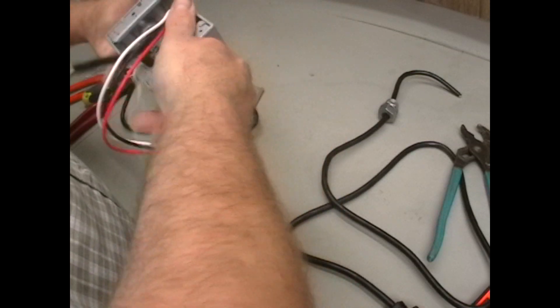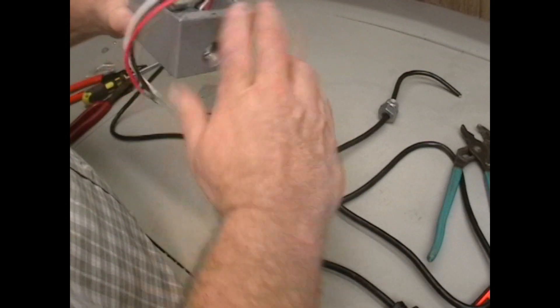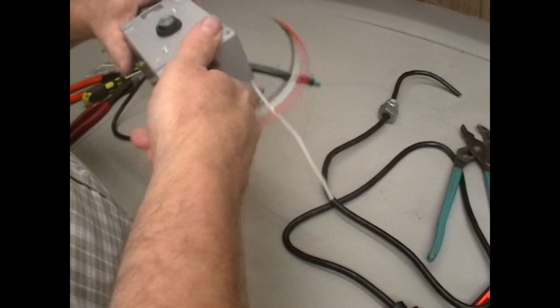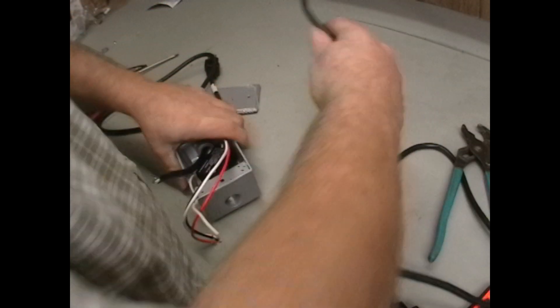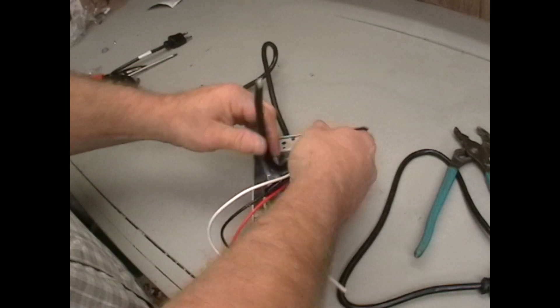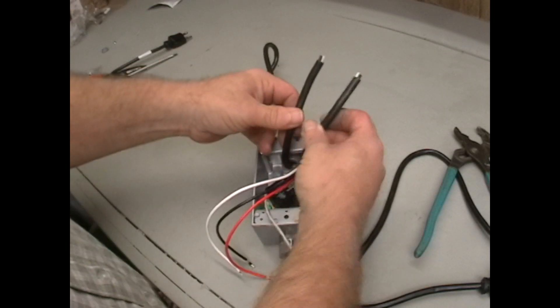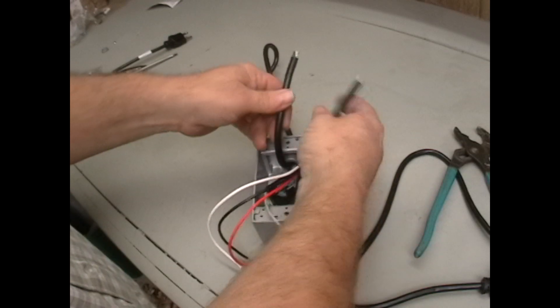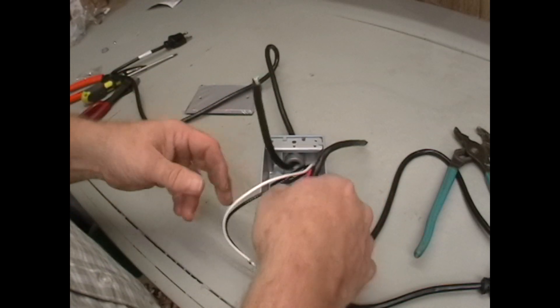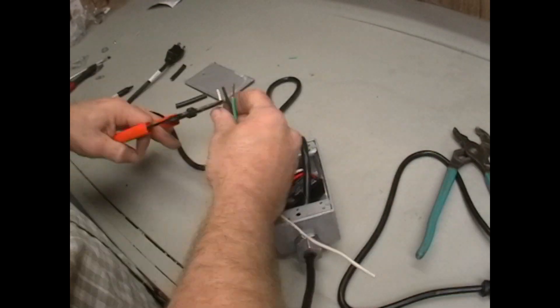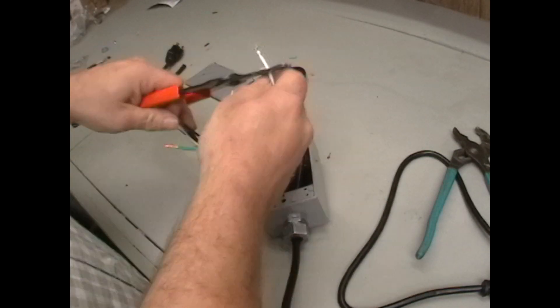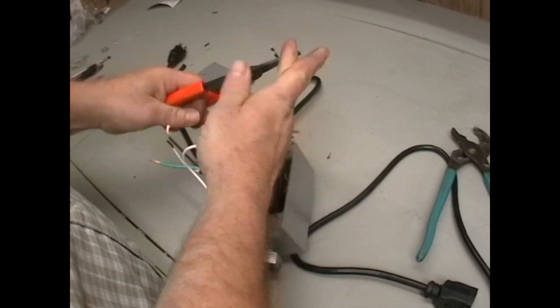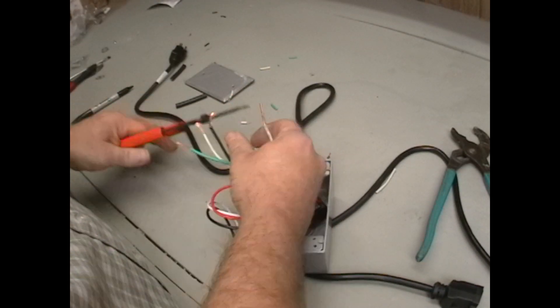Okay, we're ready to do our wiring here. I'm going to strip the ends on my extension cord and then we're going to wire them up to the photocell.